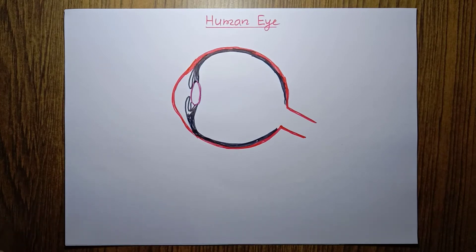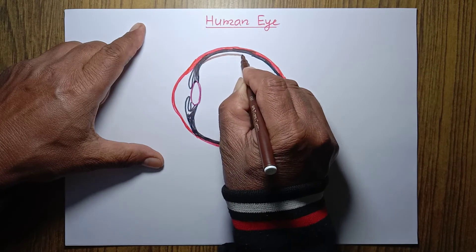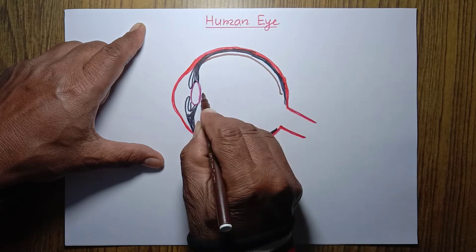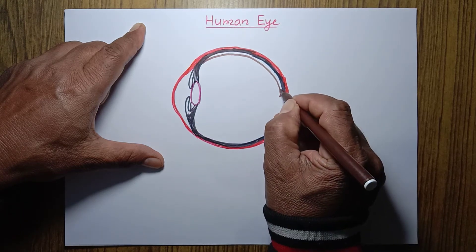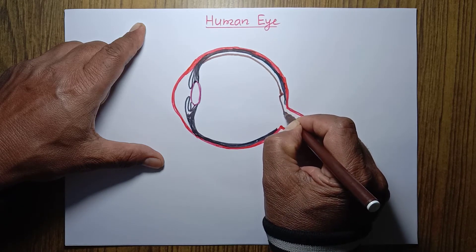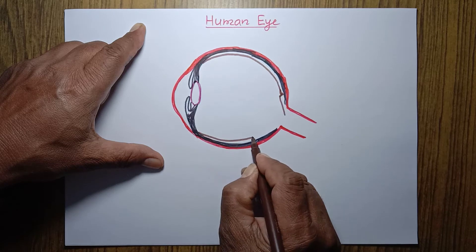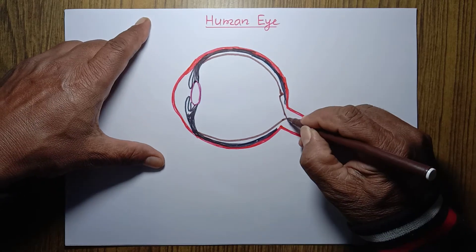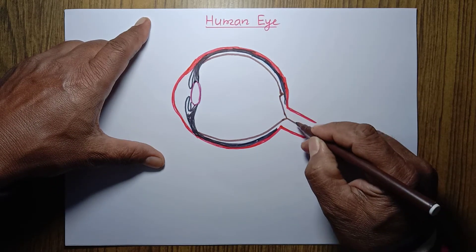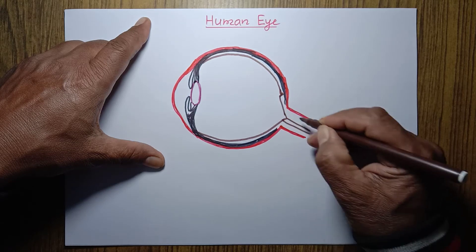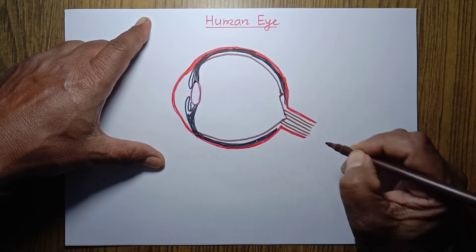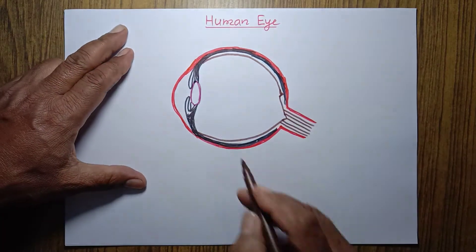Now I'm going to make the third layer of our eyeball — the innermost layer. Just behind the lens, I'm making a constriction here. This one is the third layer.